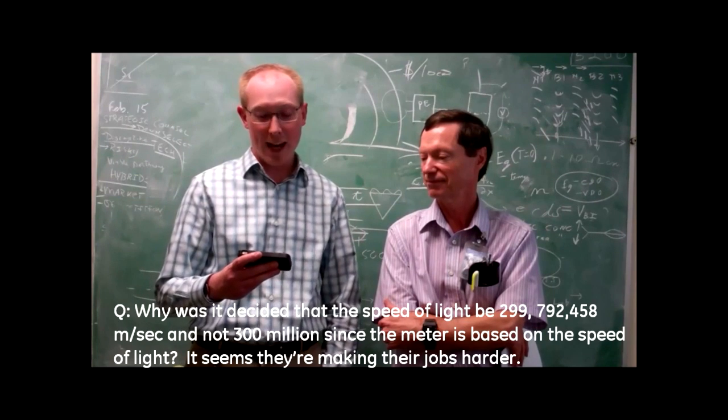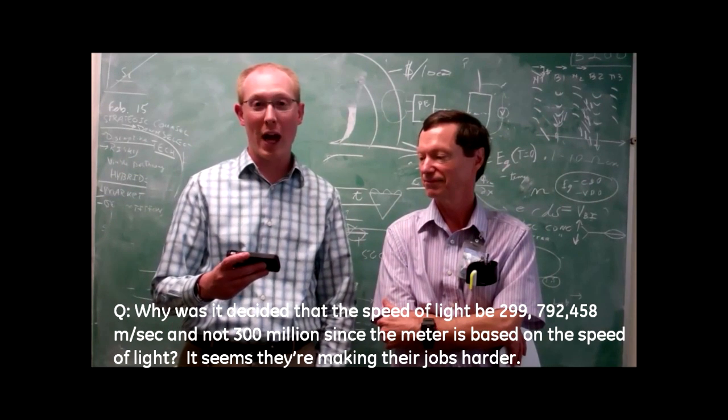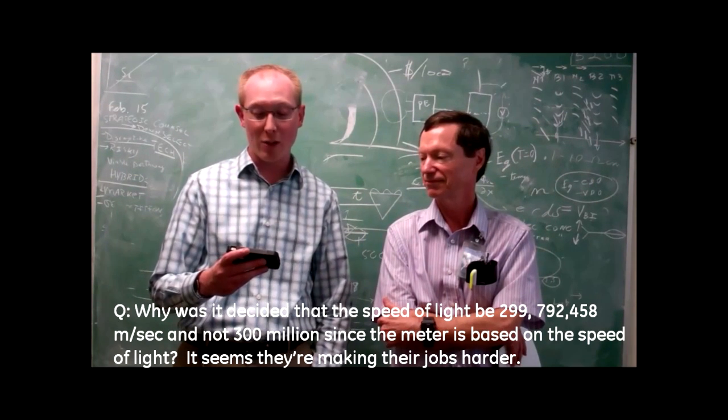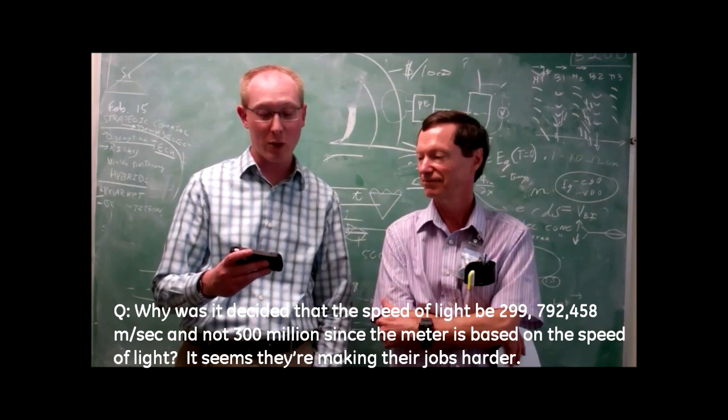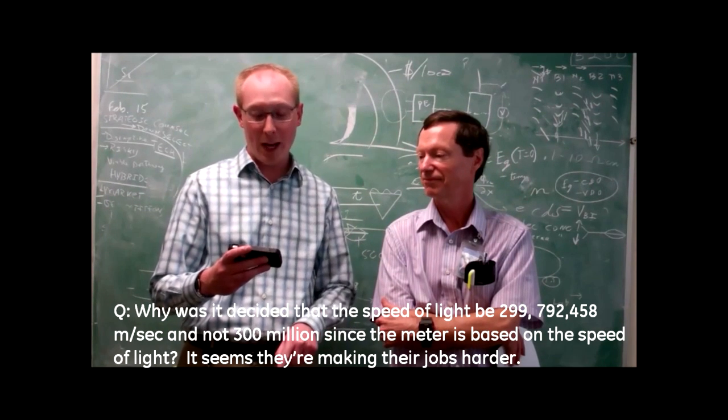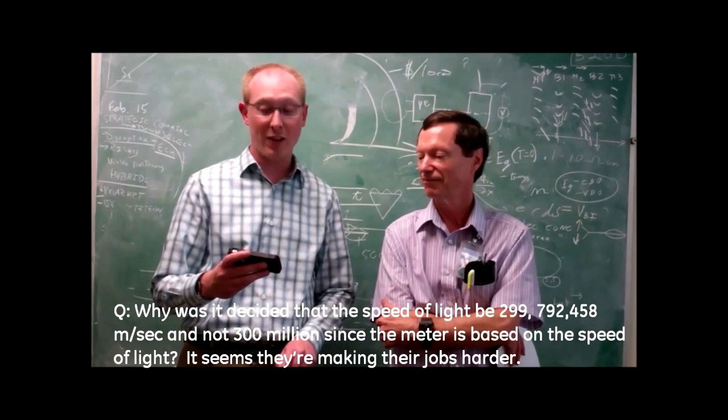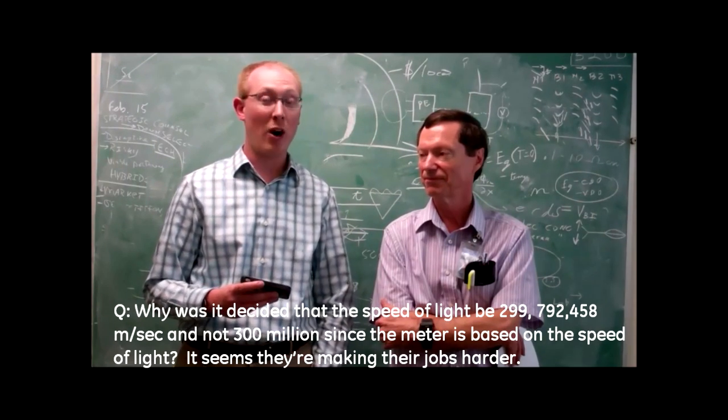who wants to know why was it decided that the speed of light be 299,792,458 meters per second and not 300 million since the meter is based on the speed of light? It seems they are making their jobs harder.